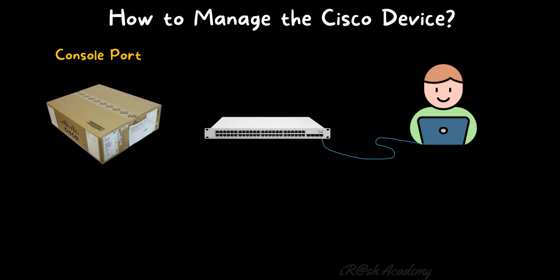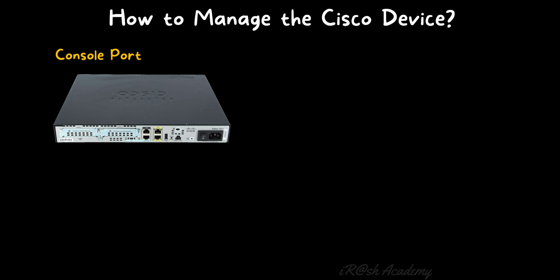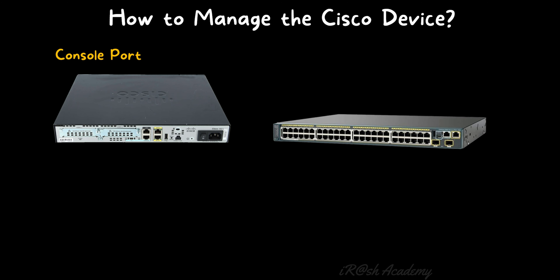Once you enable remote access, you can access the device remotely over the network — you don't need to sit in front of the device; you can access it from anywhere in the world. For some devices, the console port is available at the back side, and for some other devices it is at the front side. If you see the first picture, it is a back view of a router with the console port at the back side, and in the second picture the console port is at the front side.